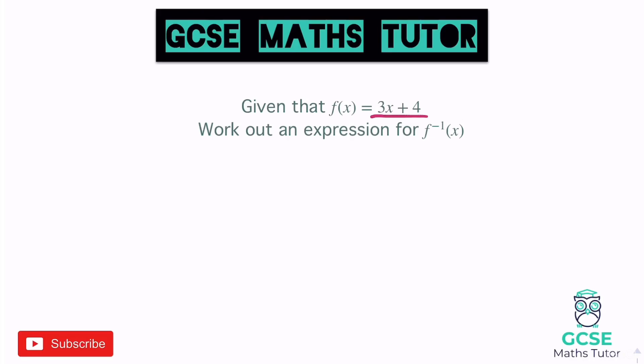Now it's just personal preference — there are lots of ways of doing this, this is just the way that I like to do it. Instead of writing the function of x equals 3x plus 4, I like to just write y equals 3x plus 4. So I write y equals 3x plus 4, and now what I do is rearrange it to make x the subject.